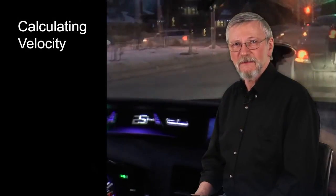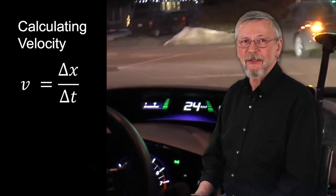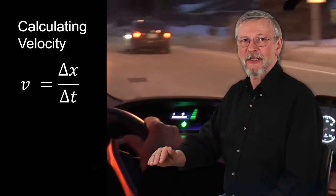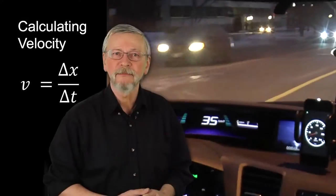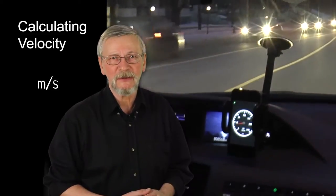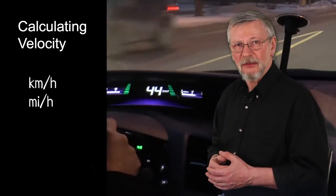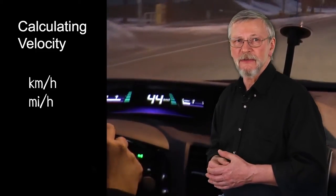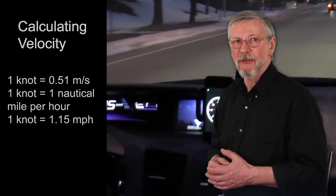The average velocity v can be calculated by dividing the total distance traveled delta x by the average time traveled delta t. The SI unit for speed is meters per second. Kilometers per hour are also commonly used, along with miles per hour in the UK and the USA. Knots are used in maritime and air navigation.